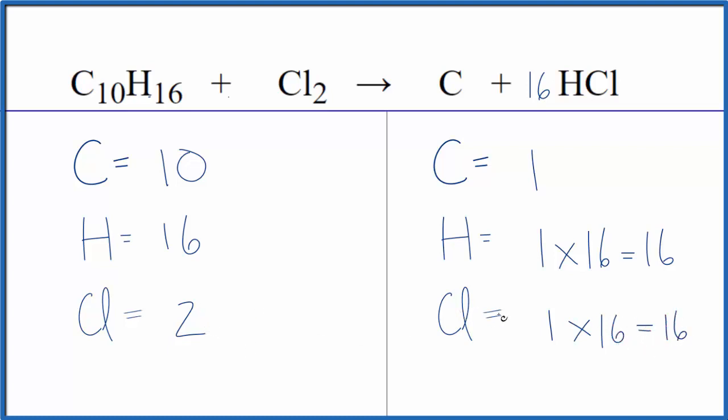Kind of easy to fix that though, we could just put an 8 in front of the Cl2. 2 times 8, that gives us 16, so those are balanced.